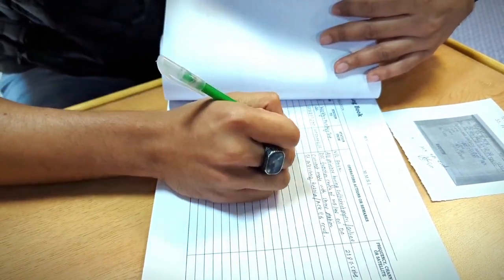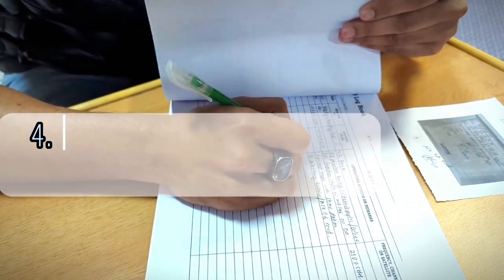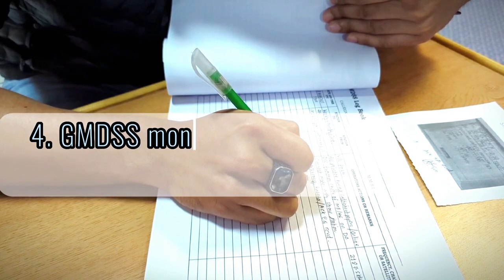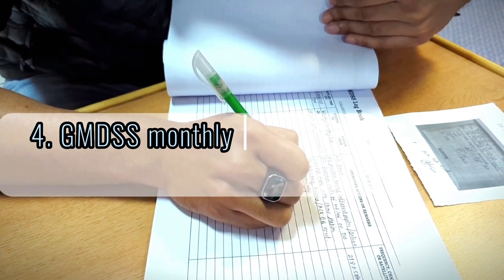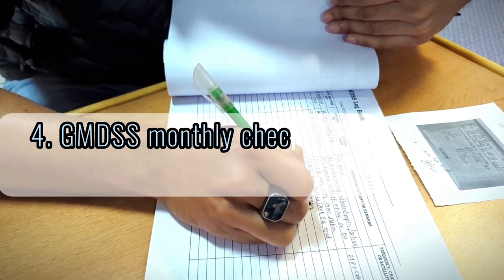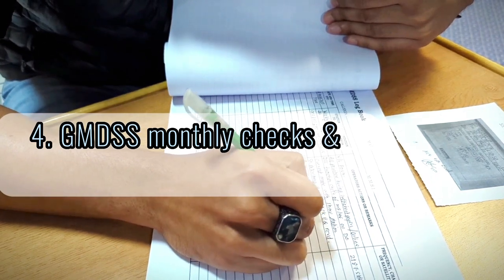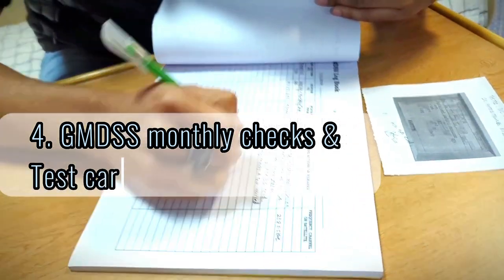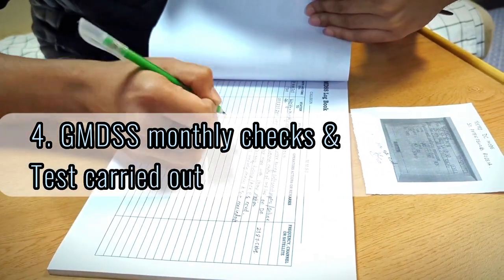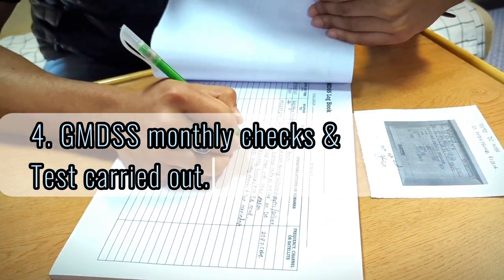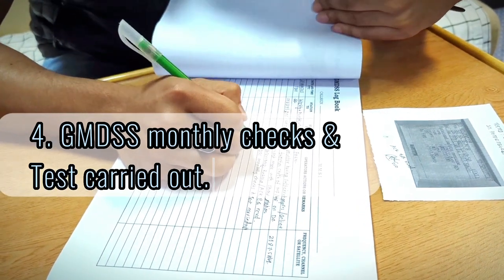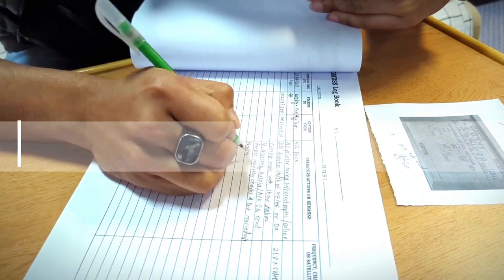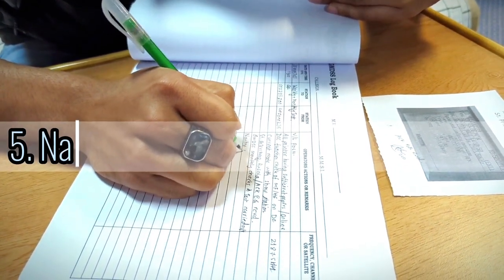Okay, the next record is GMDSS monthly checks and test carried out. Then I mentioned point-wise one by one. First, I would like to write Navtex checked.